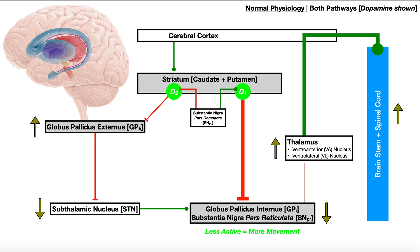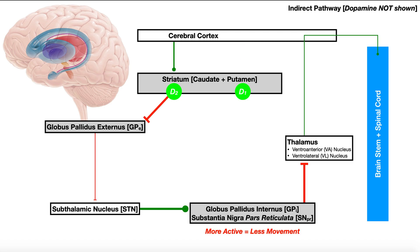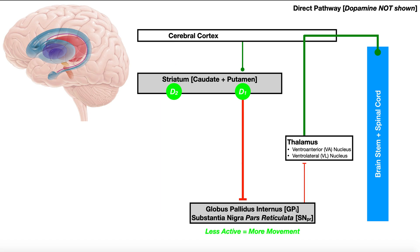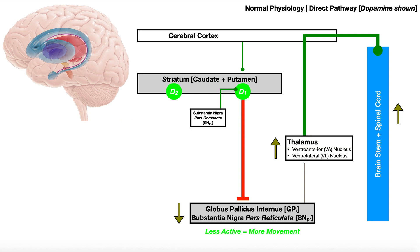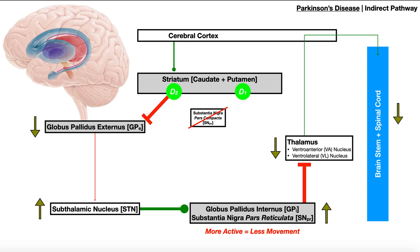You have to understand that normal physiology before you look mechanistically at Parkinson's. But once you do understand it, it will explain why we see in Parkinson's patients that they have issues initiating movement. I just want to mention: those slides where we talked about the direct and indirect pathways without dopamine or the substantia nigra shown — that's not actually how it works. I just showed those first so we could understand the more complicated reality where we have the direct pathway with the substantia nigra and the indirect pathway with the substantia nigra.